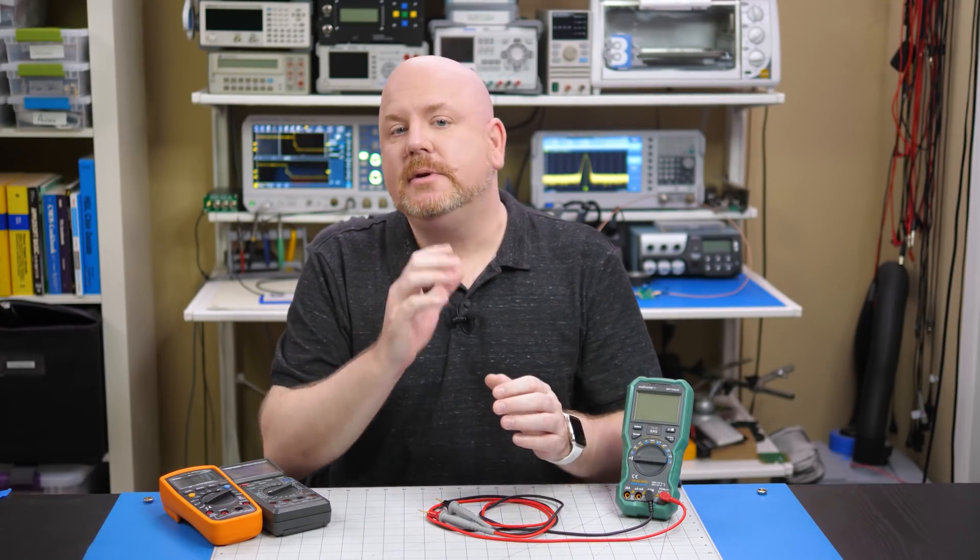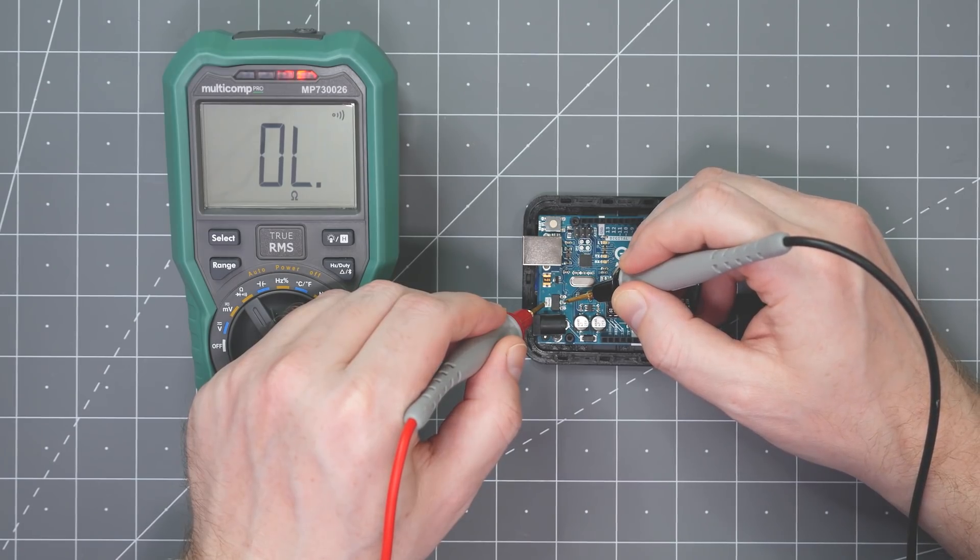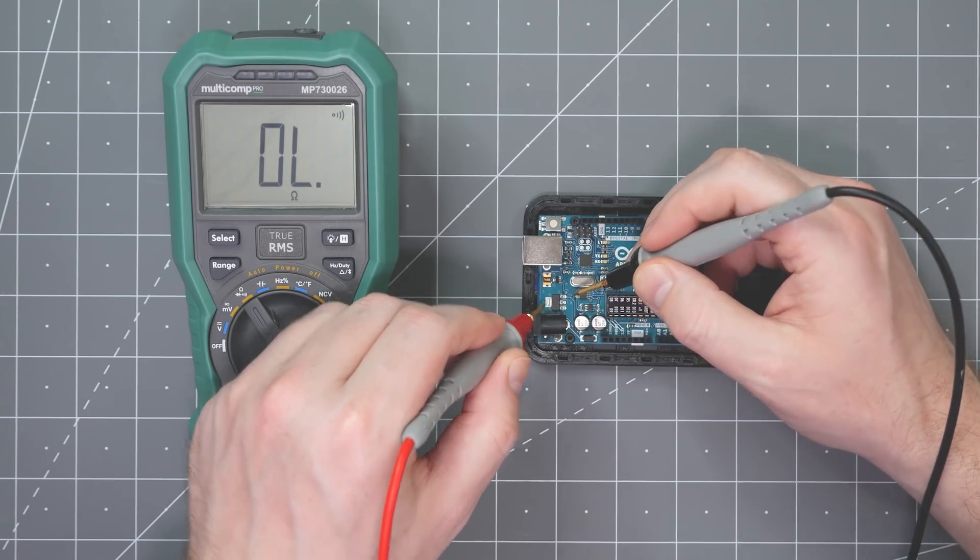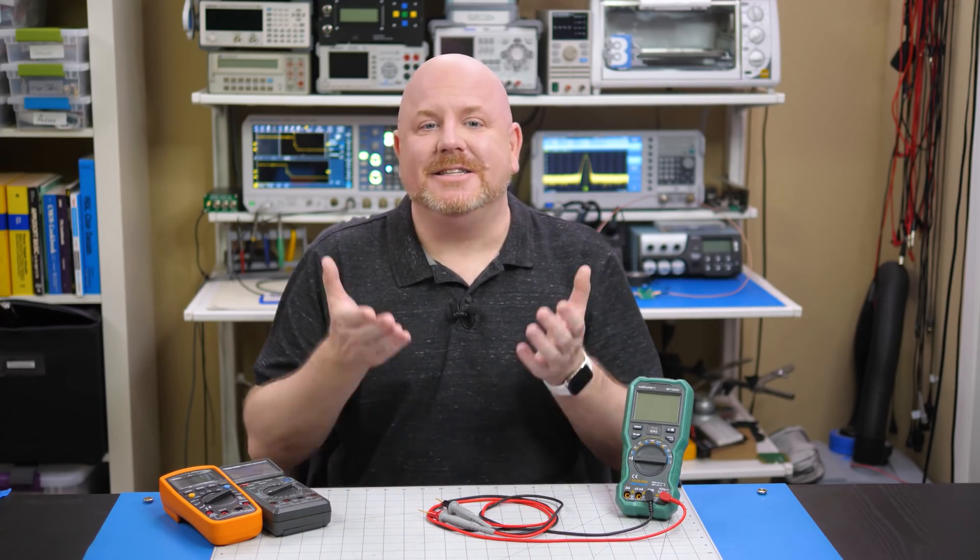Before closing the topic, we do need to address how active components like transistors and ICs get measured. For example, on this Arduino Uno, if I measure the voltage regulator, it looks like two of the pins are shorted, and the rest are open. But, are they?